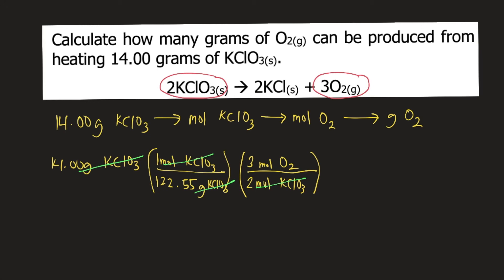Finally, from moles of oxygen gas, you need to convert to grams of oxygen gas. We need the molar mass of oxygen gas: 1 mole of oxygen gas weighs 32 grams. So moles of O₂ cancel, and our final unit is grams of O₂.